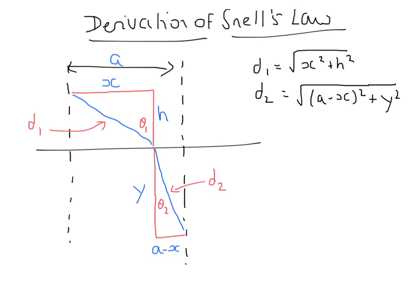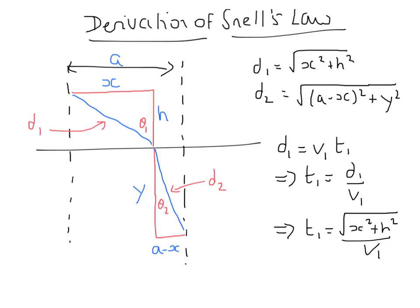Since the material is the same before it hits the boundary and after, the speed of light is going to be constant while it's in the same medium. So we can get this expression for the distance d1 in terms of the speed of light in that medium, v1, and the time it takes to get there.